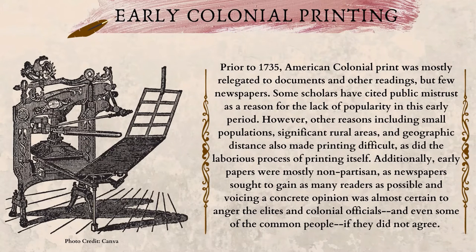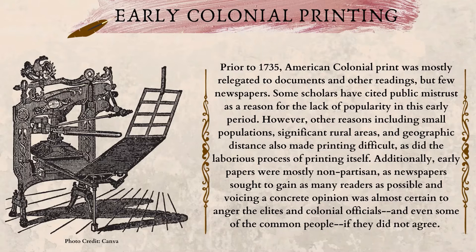Early colonial printing. Prior to 1735, American colonial print was mostly relegated to documents and other readings, but few newspapers. Some scholars have cited public mistrust as a reason for the lack of popularity in this early period. However, other reasons — including small populations, significant rural areas, and geographic distance — also made printing difficult, as did the laborious process of printing itself. Additionally, early papers were mostly nonpartisan, as newspapers sought to gain as many readers as possible, and voicing a concrete opinion was almost certain to anger the elites and colonial officials, and even some of the common people, if they did not agree.